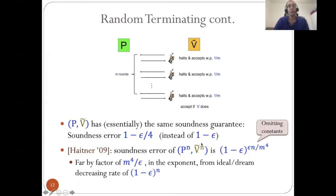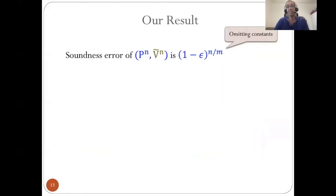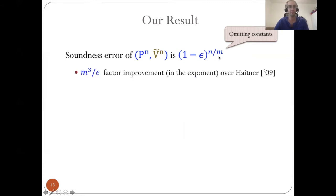The only problem is that the decrease rate is still factored by M to the fourth in the epsilon exponent, away from the dream rate of (1 minus epsilon) to the N. So after Heidner's work, it was left open whether there is a better generic method, or whether this method achieves a much stronger decrease rate and Heidner's analysis is just not tight. Our result shows the latter: Heidner's analysis is not tight, and when you take an argument, look at its random terminating variant and repeat in parallel, it actually decreases by a much stronger exponential rate — only a factor of M from the dream rate.